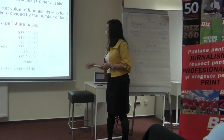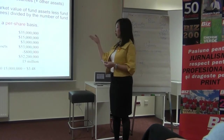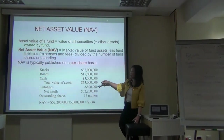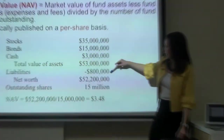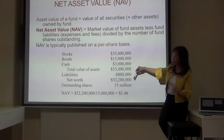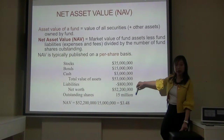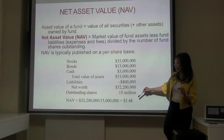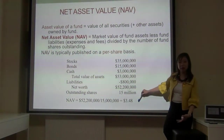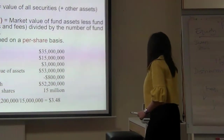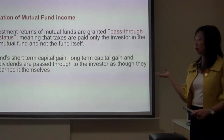NAV is published on a per-share basis. For example, a hybrid fund with stocks, bonds, and cash has assets of $53 million and some liabilities — management fees, for instance. The net worth divided by 15 million shares outstanding gives an NAV of $3.48 per unit. That's how you calculate NAV, and every fund publishes this — you purchase at the NAV.